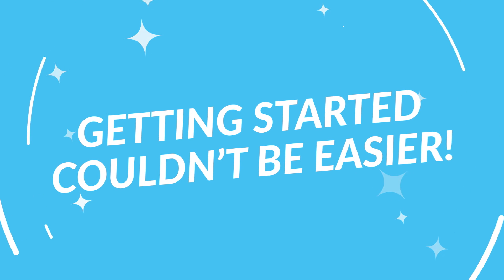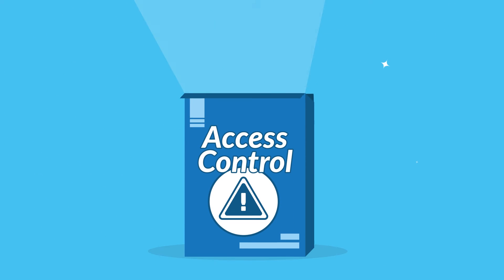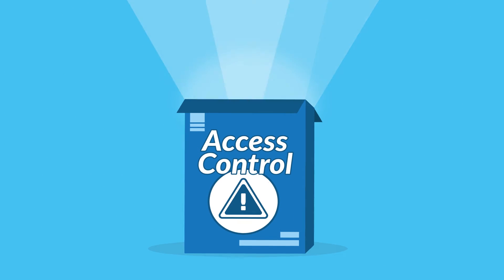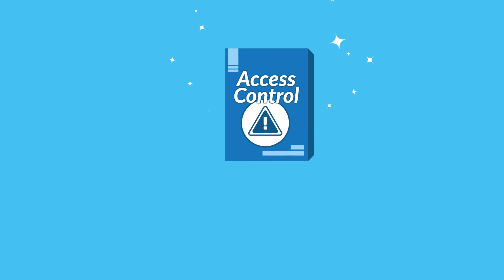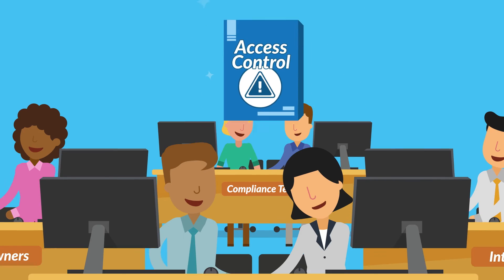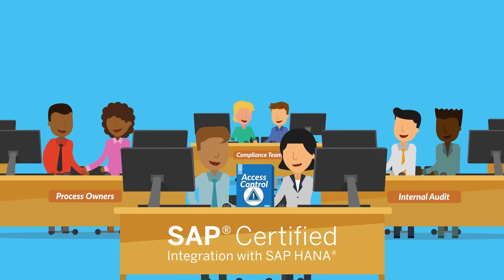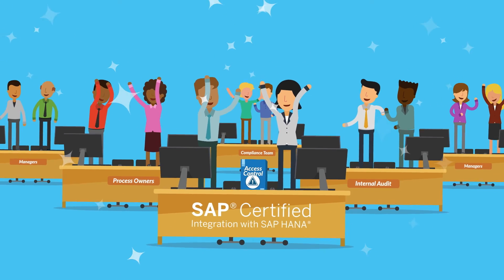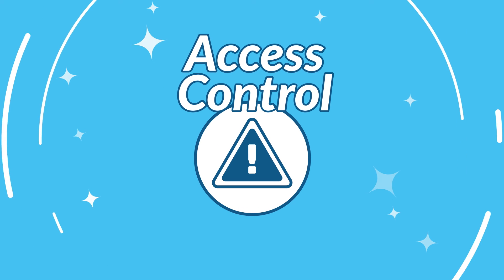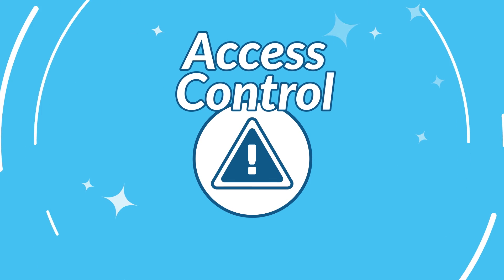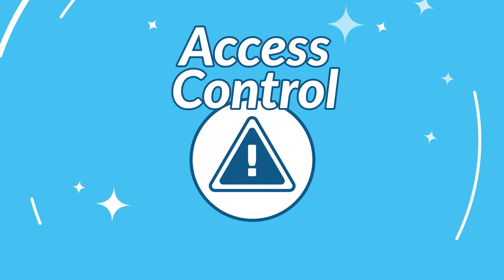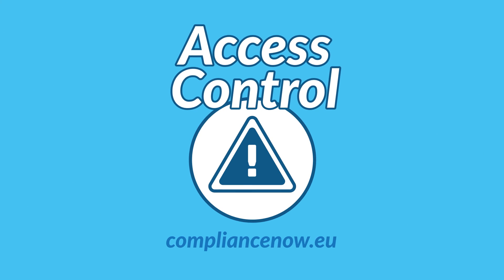Getting started couldn't be easier. With Access Control's out-of-the-box installation, you're up and running in just two to three days. And once you get in compliance, you can easily stay there. Access Control grows and adapts as your company matures, so it is always delivering exactly what you need. Find out how the certified Access Control can help your company simplify and streamline its risk management processes by visiting ComplianceNow.eu.